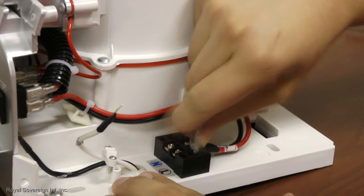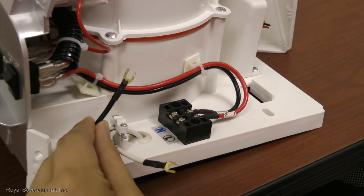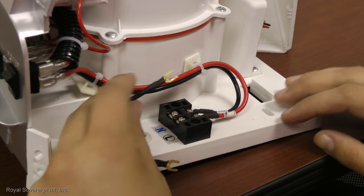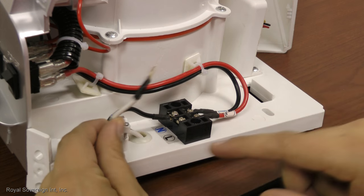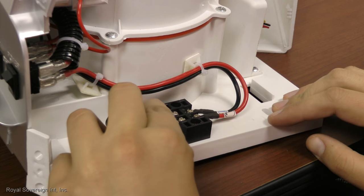Step 5: Remove the plastic cover from the electrical terminal block. Attach the black negative cable to the negative terminal labeled N. Attach the white positive cable to the positive terminal labeled L.